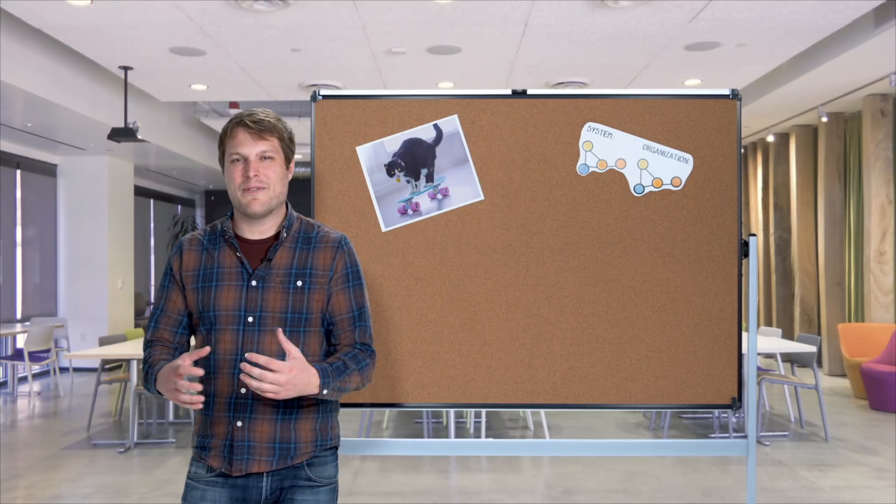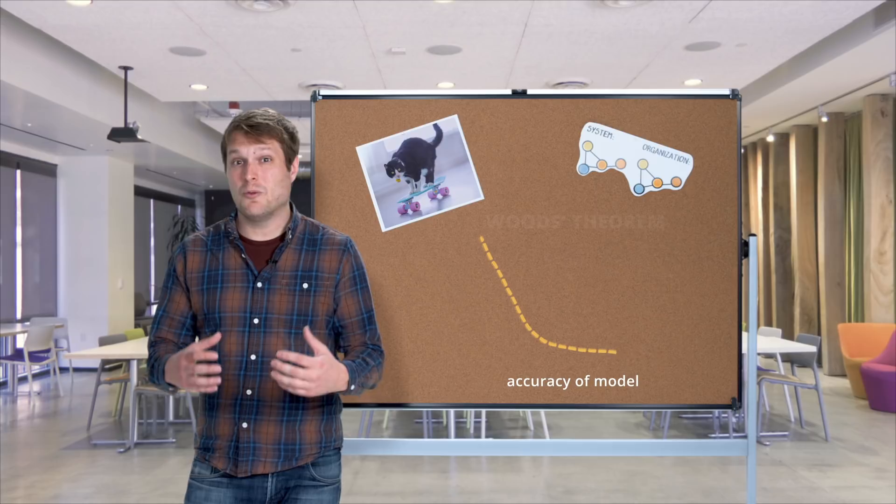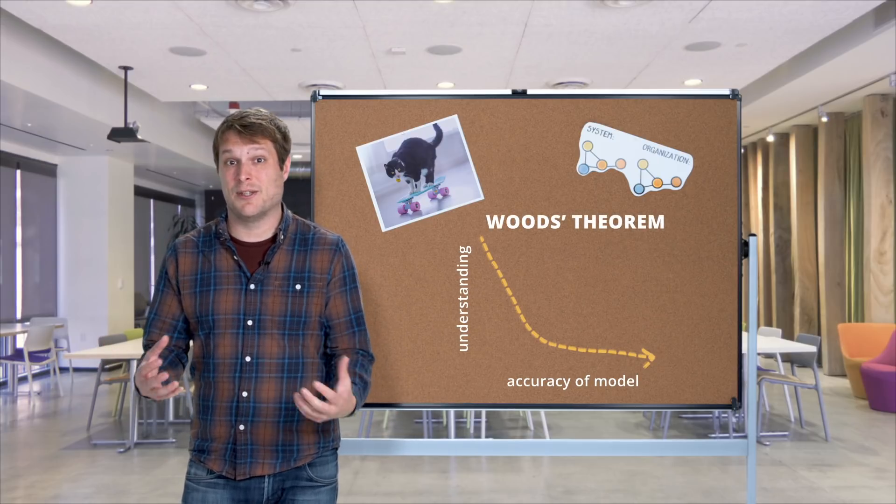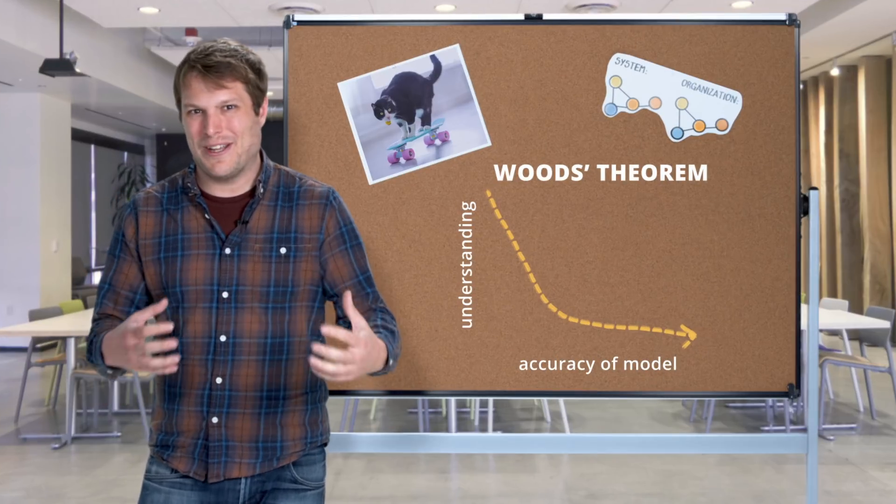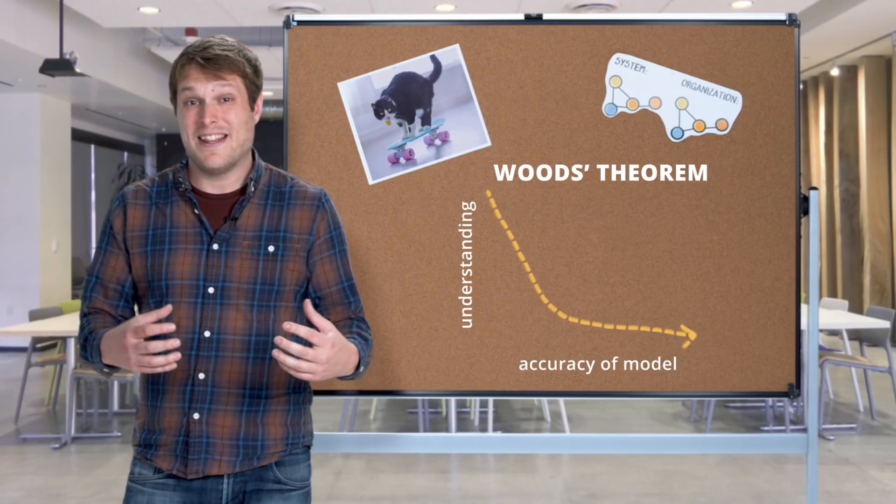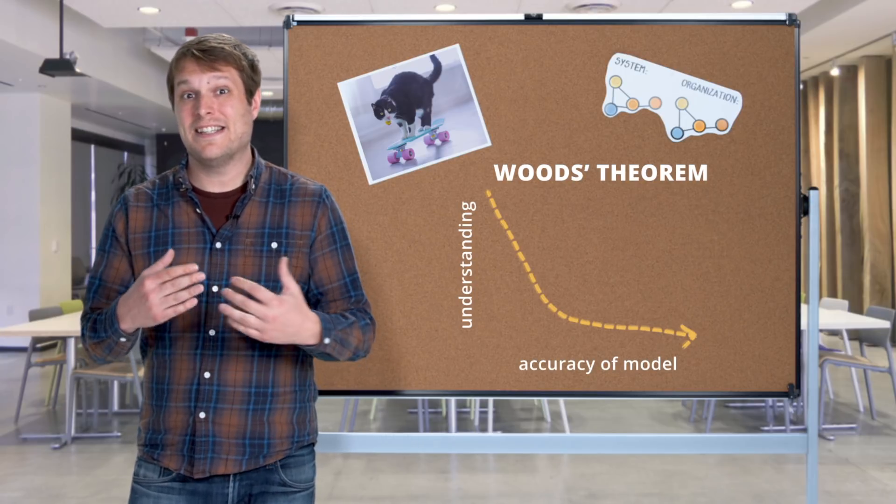It turns out we have a really nice way to describe the situation with complex systems. It's called Woods Theorem, after Dr. David Woods from Ohio State University, who studies cognitive systems and how we interact with them. It describes this really interesting situation where, as the complexity of a system increases, the accuracy of how well we understand that system is constantly decreasing.